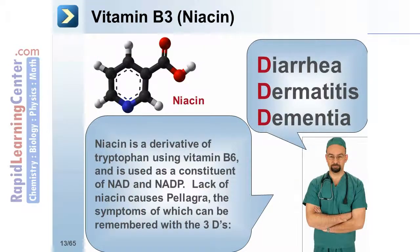Vitamin B3, also known as niacin, is a derivative of tryptophan using vitamin B6 and is used as a constituent of NAD and NADP. Lack of niacin causes pellagra, the symptoms of which can be remembered with the three Ds: diarrhea, dermatitis, and dementia.